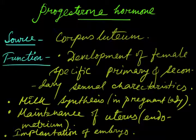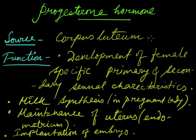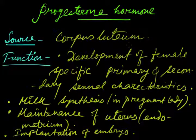The next important hormone is progesterone. The source of progesterone is the corpus luteum, which is the scar tissue formed after ovulation from the Graafian or mature follicle, as shown in the previous picture.